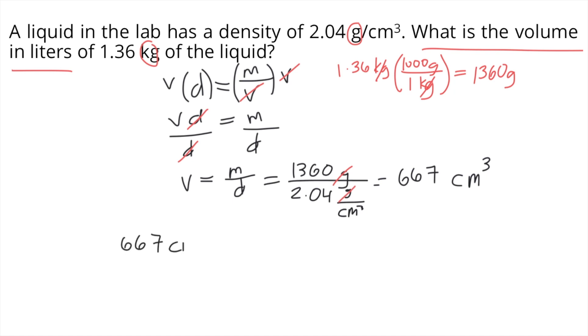We got 667 cubic centimeters. We know that the conversion for every 1 liter, there are 1,000 cubic centimeters. The cubic centimeters would cancel out, and the volume in liters would be 667 times 1 divided by 1,000, and that's equal to 0.667. So the answer to this question is 0.667 liters.